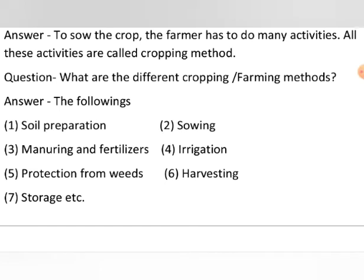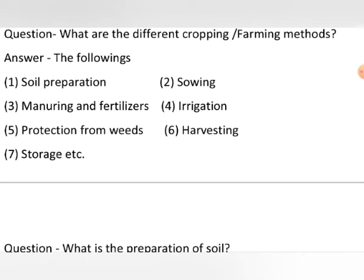The following are the important methods. The first method is soil preparation, then sowing, then manuring, the fourth is irrigation, the fifth is protection from weeds, the sixth is harvesting, and the seventh is storage. These are the seven main farming methods — the main activities which a farmer performs from the very beginning to the time of yielding the crop.